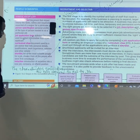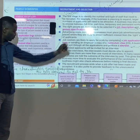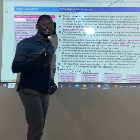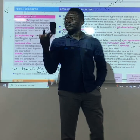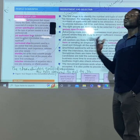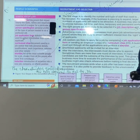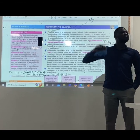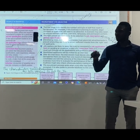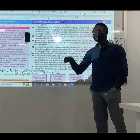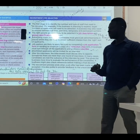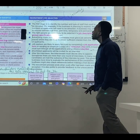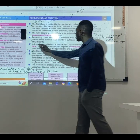For person specification, we're talking about the characteristics, the quality, the skills, the qualification that the individual needs to have before we can employ him or her. Is it clear? Yes. Then the third stage — advertisement.